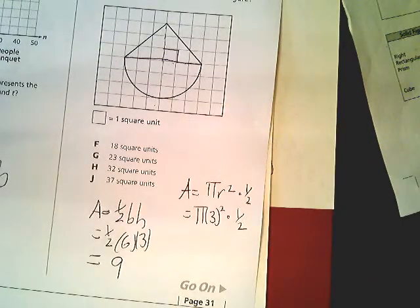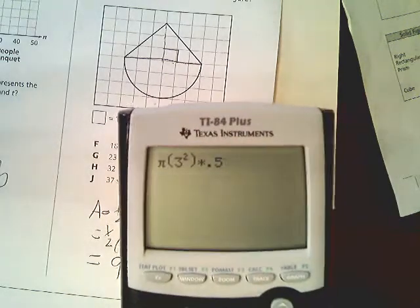So my answer for this part, pi times 3 squared times 0.5, to me it looks like this, gives you 14.1.